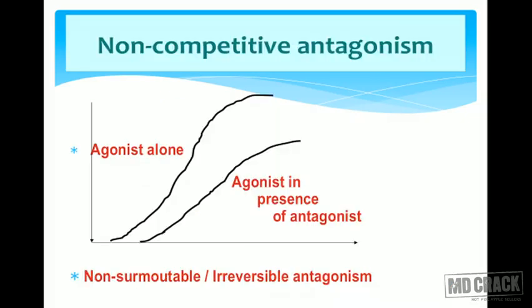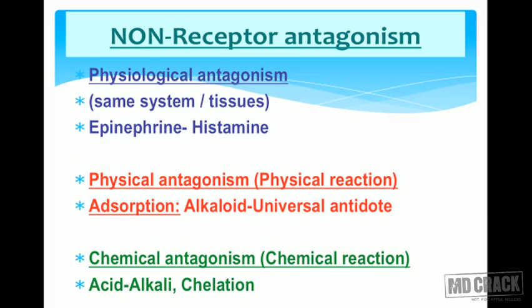On the dose-response graph, in non-competitive antagonism the agonist can never reach its maximal response no matter how much agonist is added — this is why it is called non-surmountable or irreversible antagonism.